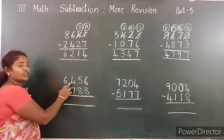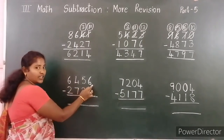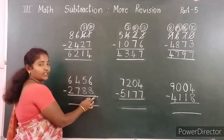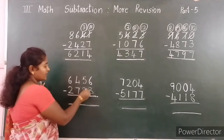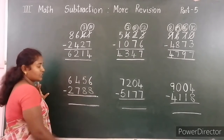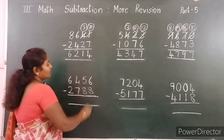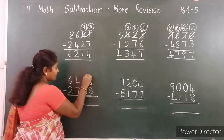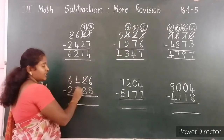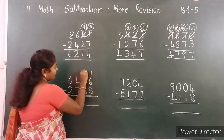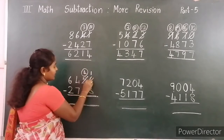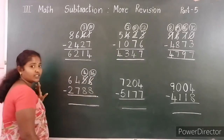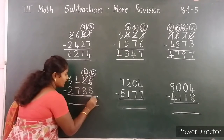Next example: 6,456 minus 2,780. Start from the ones place. Here 6. 6 minus 8 — not possible to subtract. 6 is smaller than 8, so borrow from the next place. Here 4 left, here 16. 16 minus 8 is 8.